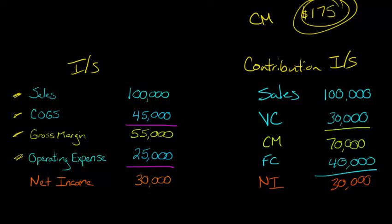Now you see here, it's basically the same firm. We've got net income $30,000 each way, so it's not like we're changing anything economically about what happened. We're just organizing the income statement in a different way so that we can see, okay, what is our contribution margin?